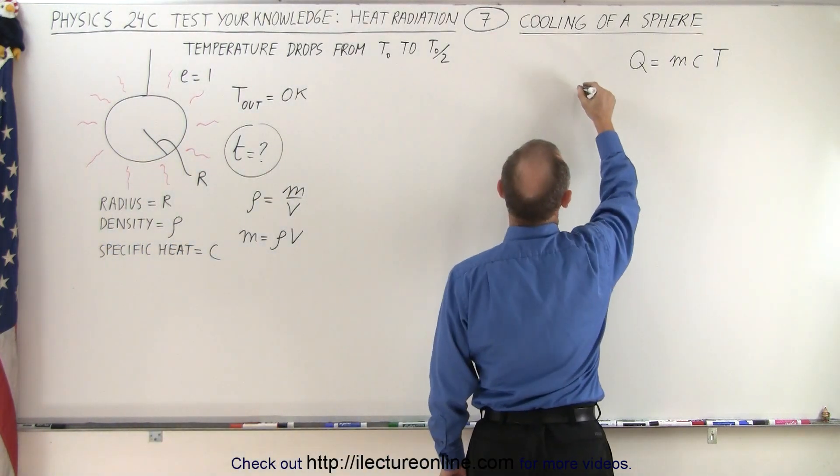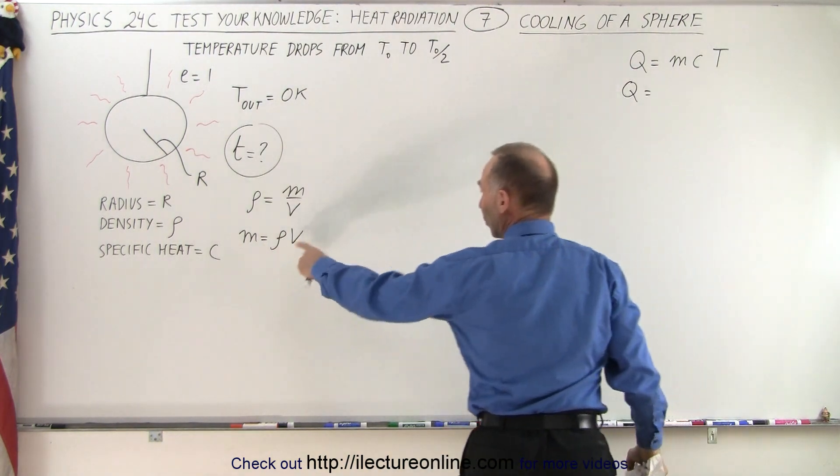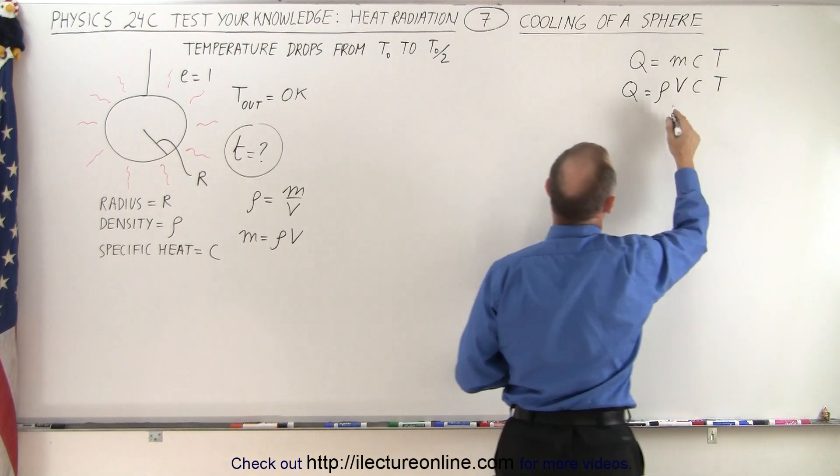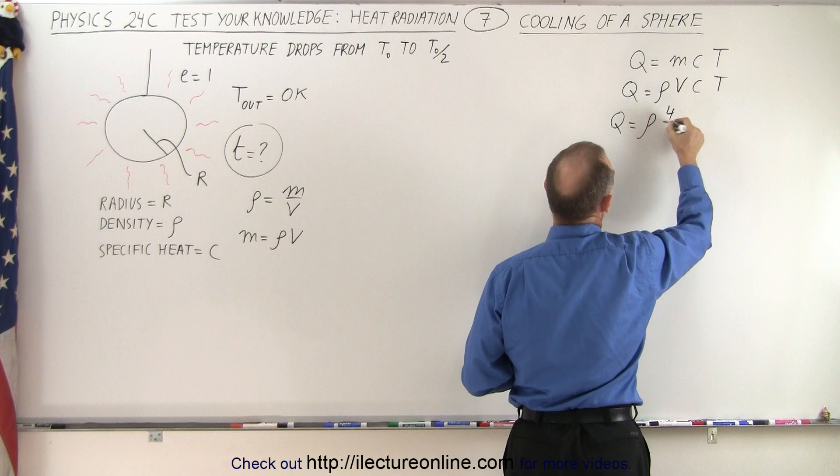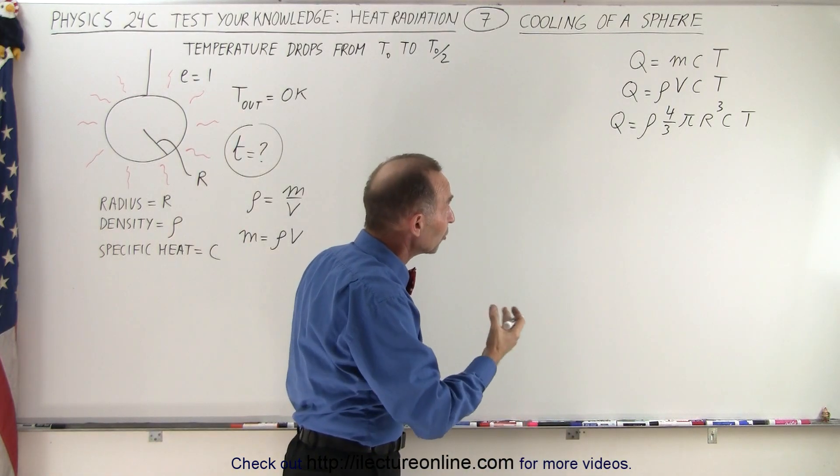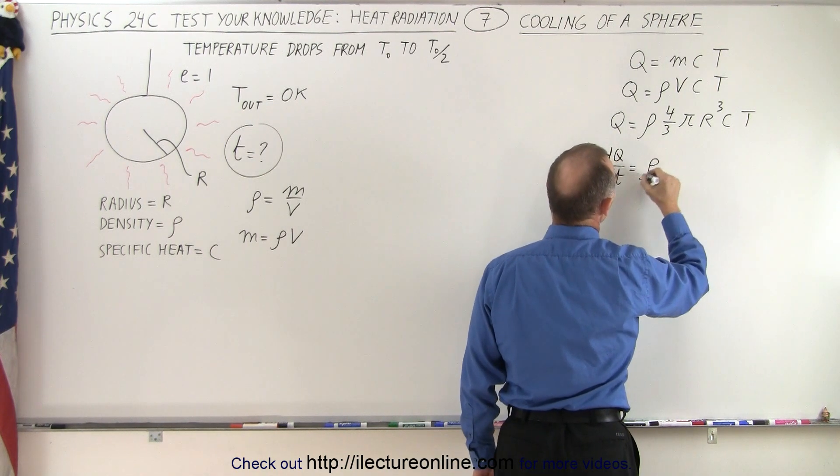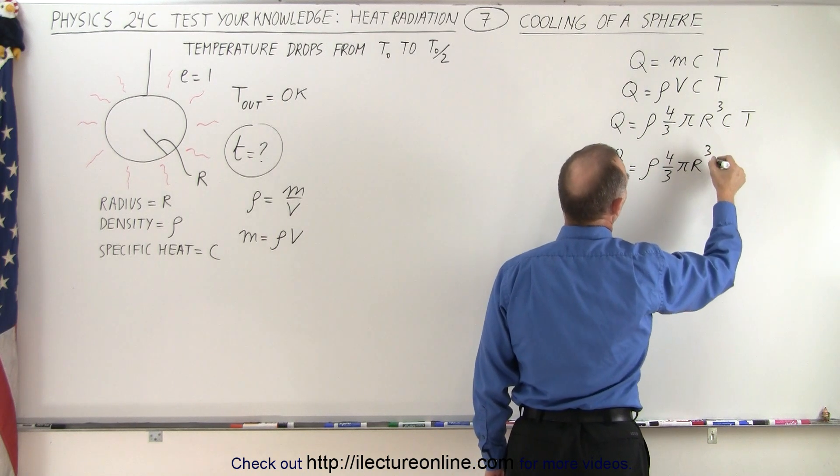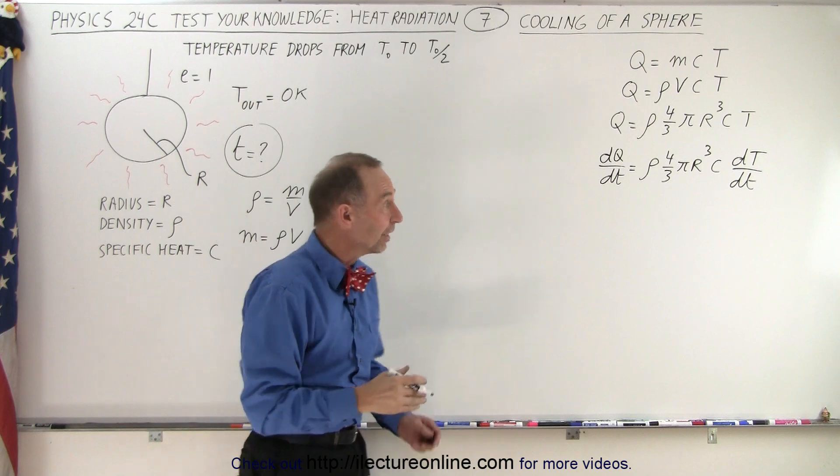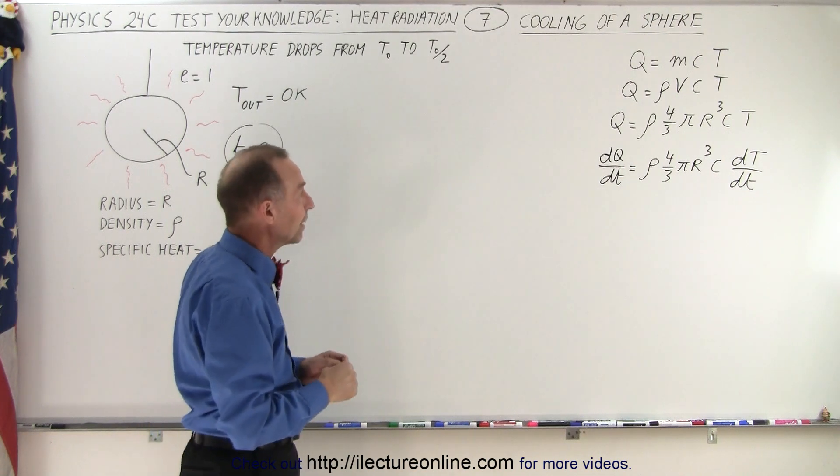So we can write that Q is equal to, instead of m we're going to write density times volume. So density times volume times C times temperature, or the volume can be expressed as ρ times 4/3 πR³ times C times T. And if we want to calculate the rate at which heat escapes, we can say that dQ/dt equals ρ times 4/3 πR³ times C times the change of temperature with respect to time, dT/dt. So the amount of heat flowing out of the sphere is proportional to the drop of temperature with respect to time. Of course dT/dt is going to be a negative quantity.